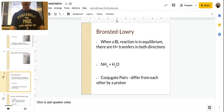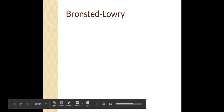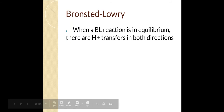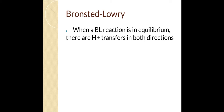To continue with Brønsted-Lowry reactions — because we've entered the pain train that is equilibrium chemistry — we need to understand how these reactions work differently than in Chapter 4 when we did strong acid/strong base reactions. When there's a Brønsted-Lowry reaction, it is in equilibrium. A reaction in equilibrium has forward and reverse reactions, so you're going to have proton transfers in both directions. Case in point: the NH3 and H2O example from earlier.